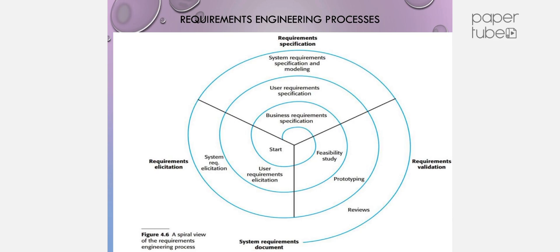Requirement Elicitation includes both System Requirement Elicitation and User Requirement Elicitation, producing User Requirements or System Requirements. These feed into Requirement Elicitation and Requirement Specification, where the requirements are formalized into a specification.